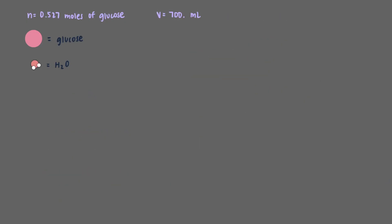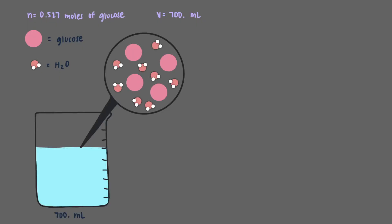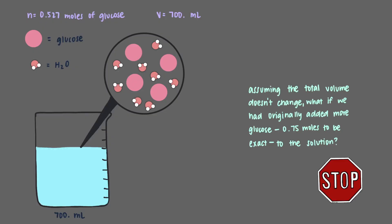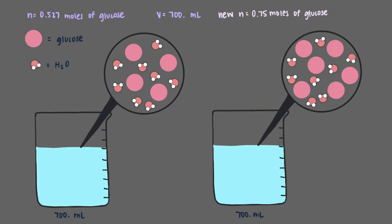Now let's take a look back at our original solution, the one with 0.527 moles of glucose that made 700 mL of solution. Assuming the total volume doesn't change, what if we had originally added more glucose, 0.75 moles to be exact, to the solution? If we had a greater amount of glucose molecules in the same amount of solution, this means that there is a greater amount of the molecules in an area. They do not have enough space in the solvent to spread out more. This means that the solution is more concentrated.